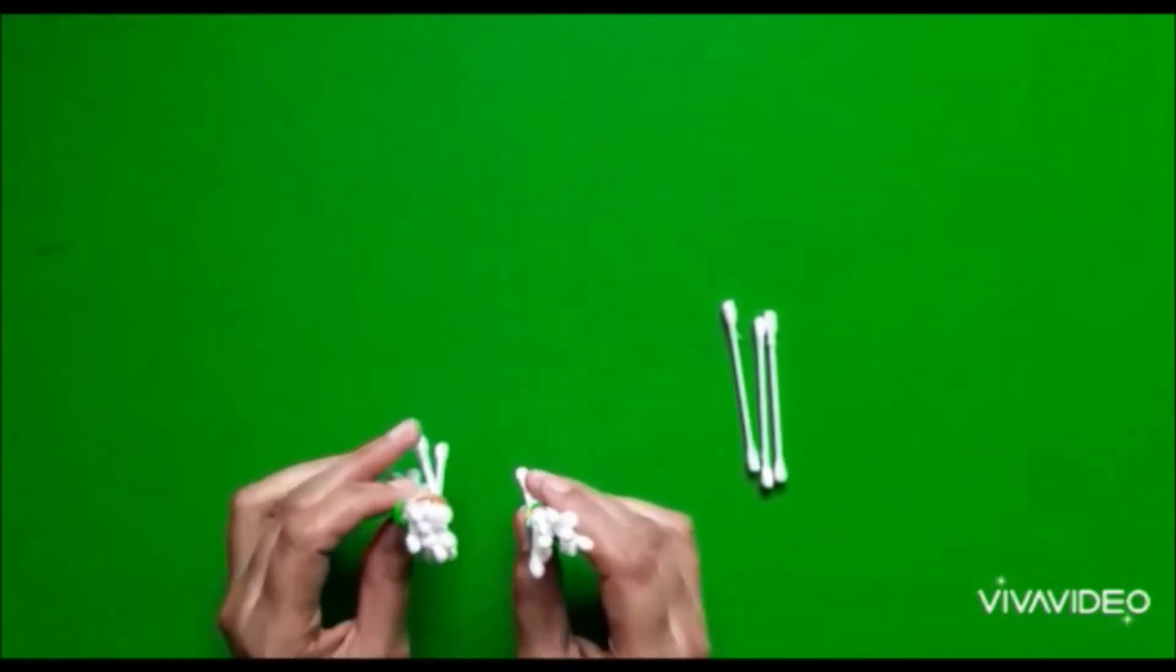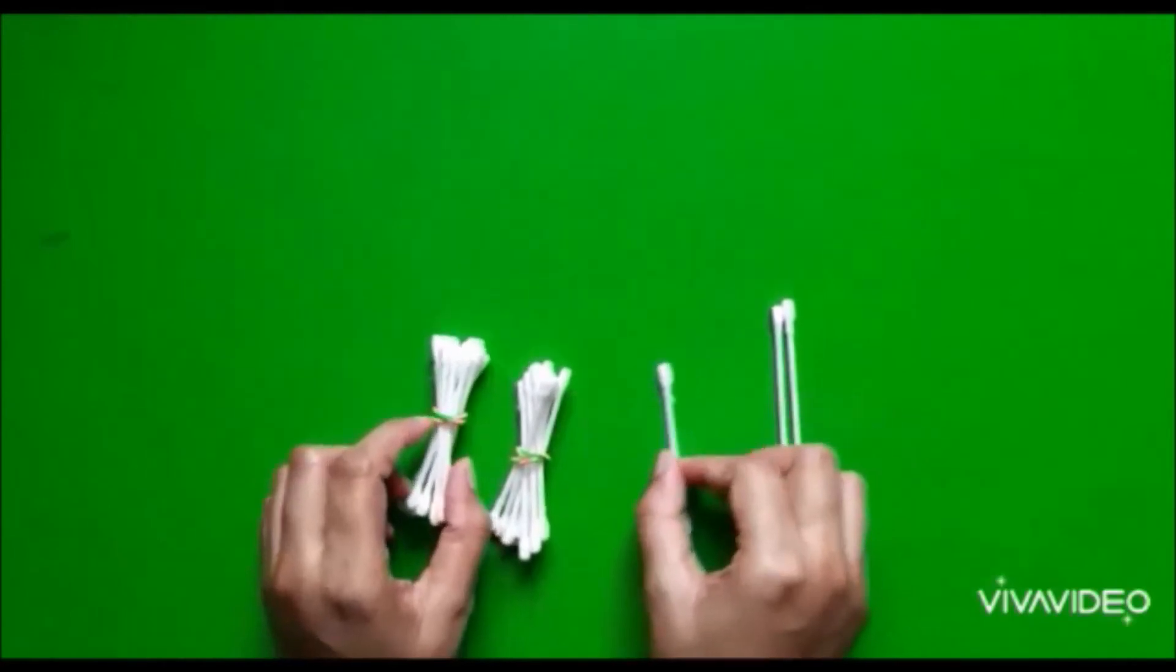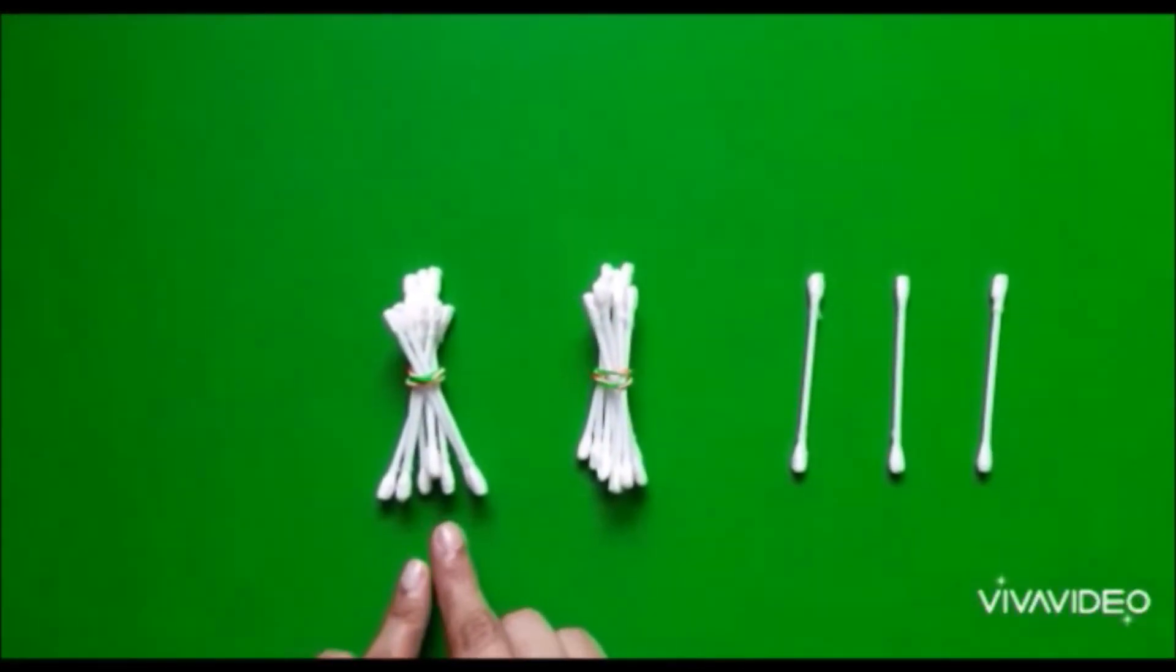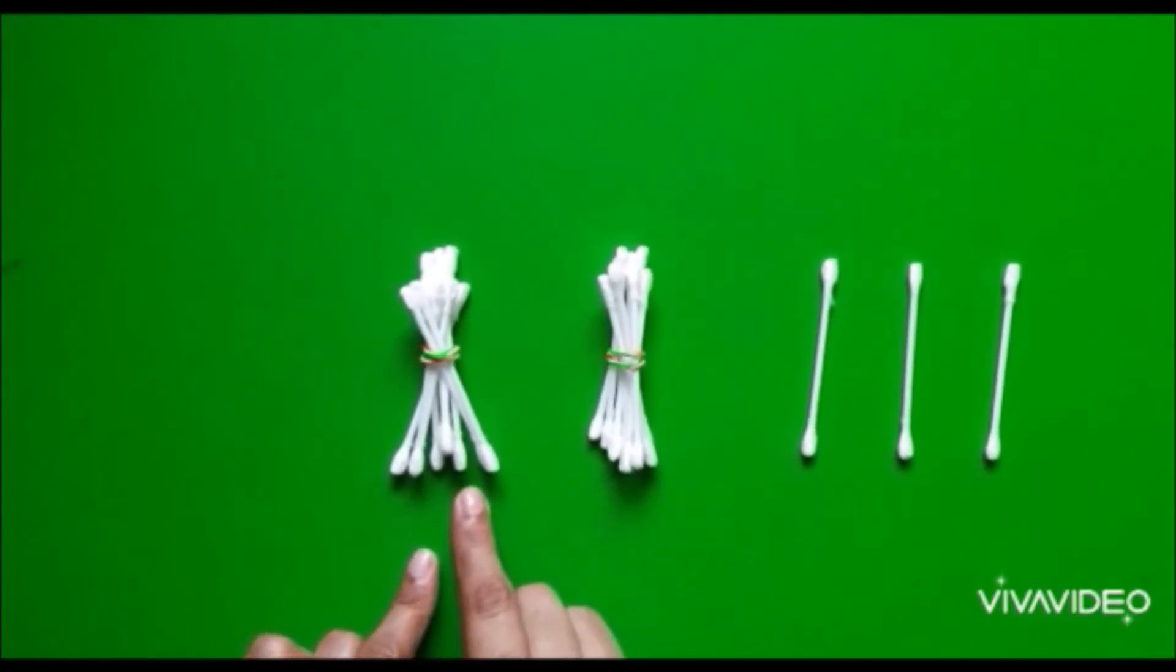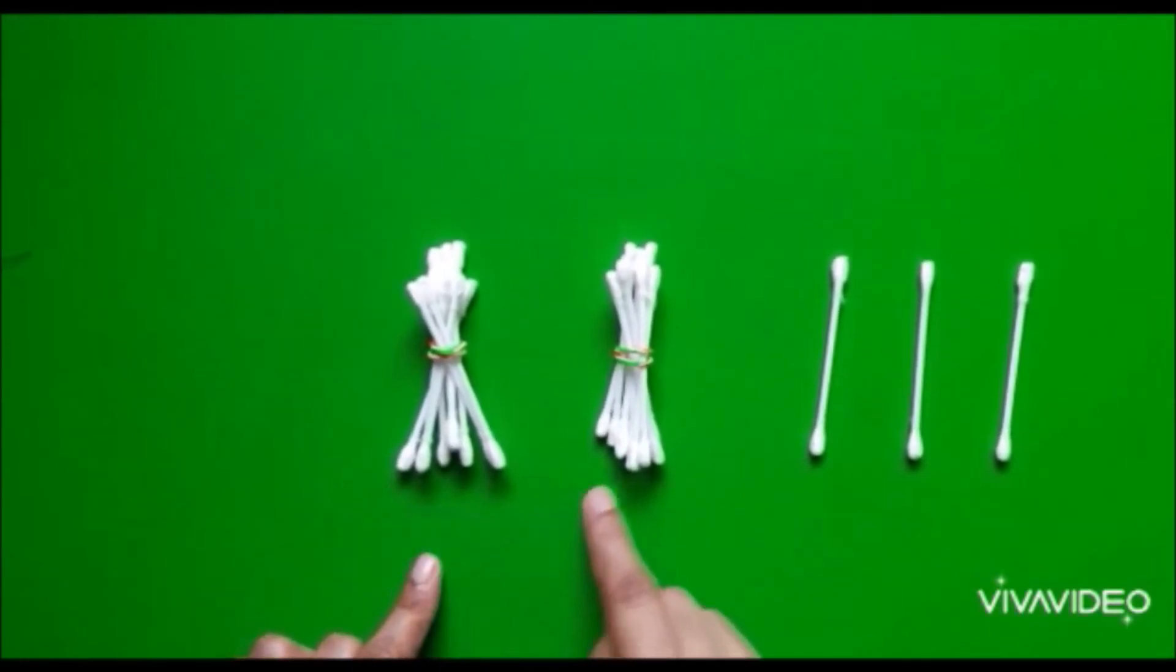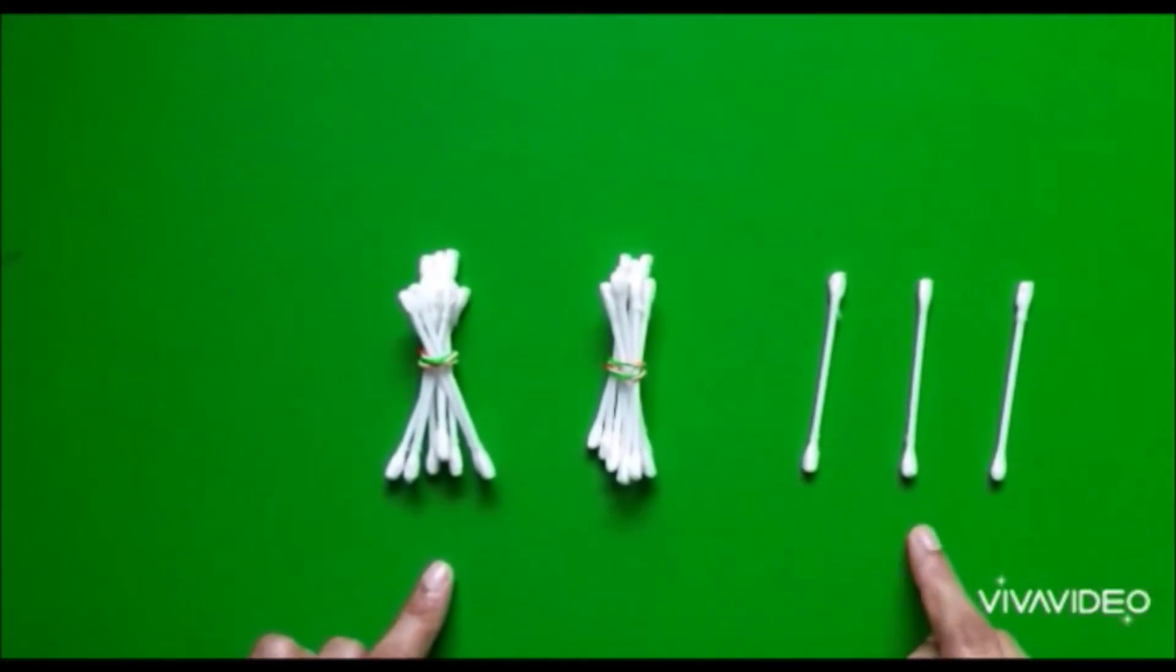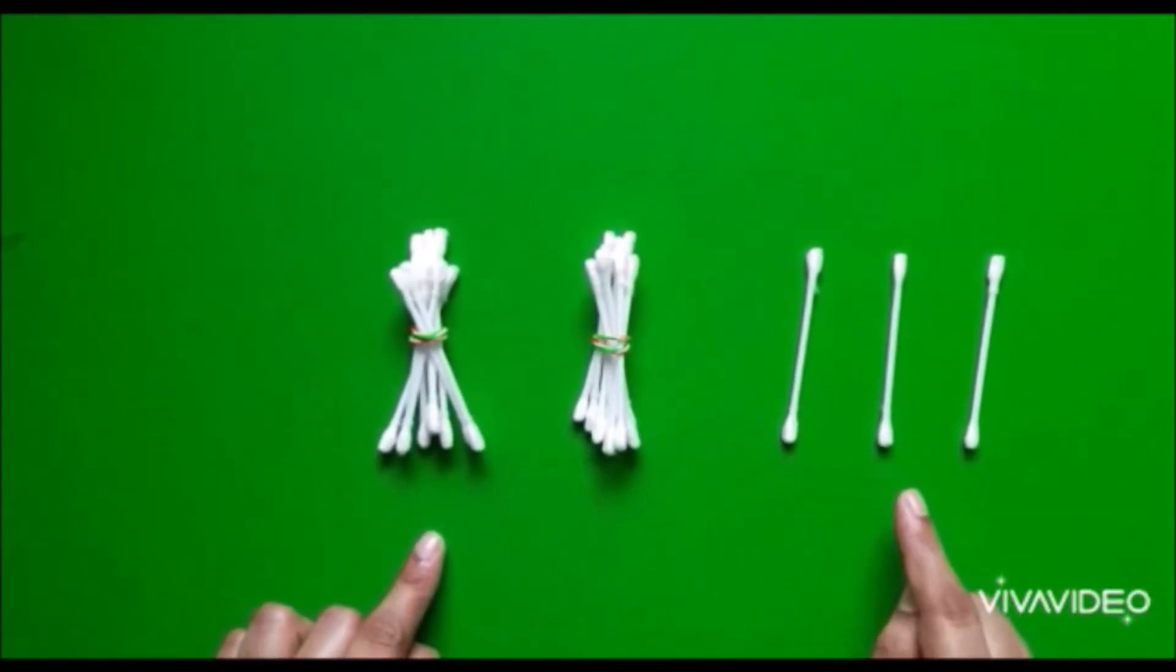2 bundles of 10 earbuds and 3 loose earbuds. Number of earbuds in one group equals to 10. So, how many groups are there? There are 2 groups and 3 loose earbuds, or we can say 3 extra earbuds.